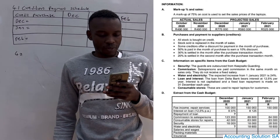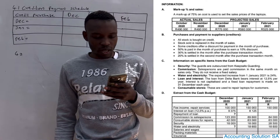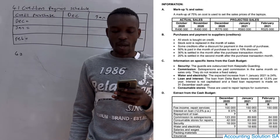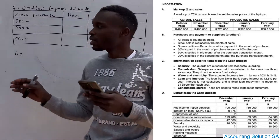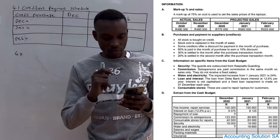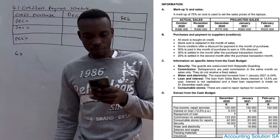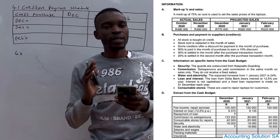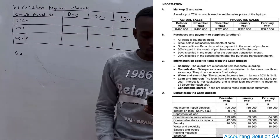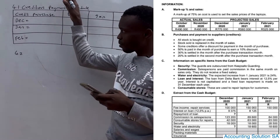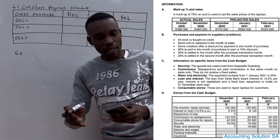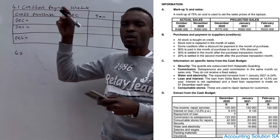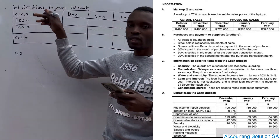Information A covers markup percentage and sales: a markup of 75 percent on cost is used to set the sales price of the laptop. They give us sales figures from October up to February. We were already provided with an answer sheet. Now let's calculate. The first step when you calculate a creditors payment schedule is you must calculate credit purchases. Just like when you prepare a debtors collection schedule you first calculate credit sales, here we deal with credit purchases because creditors payment means we are paying our supplier.